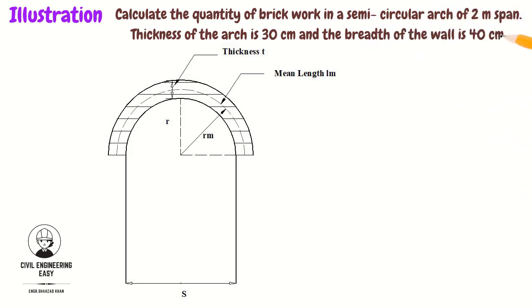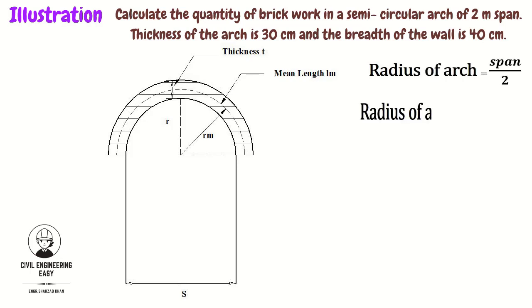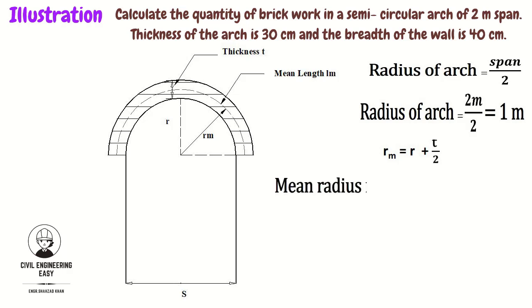First of all, calculate the radius of the arch. For a semicircular arch, the radius is equal to the span divided by 2. The span is 2 divided by 2, so the radius of the arch is 1 meter. Now calculate the mean radius. The mean radius is equal to R plus the thickness of the arch divided by 2. Putting in the values: 1 plus 0.3 divided by 2, so the mean radius is equal to 1.15 meters.